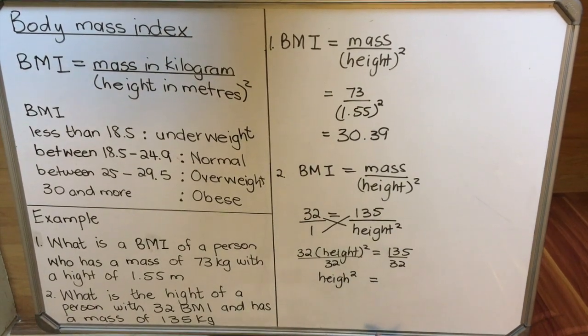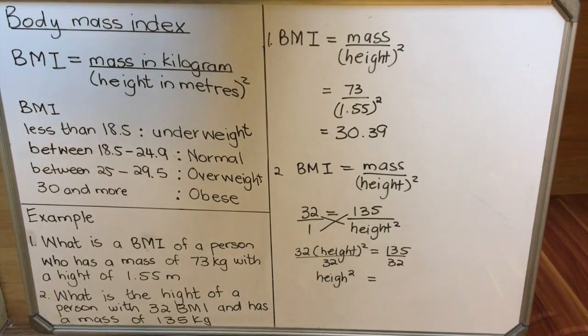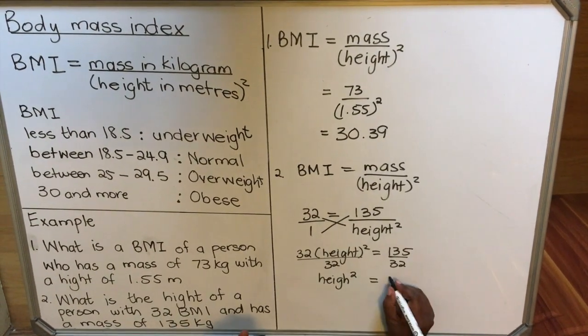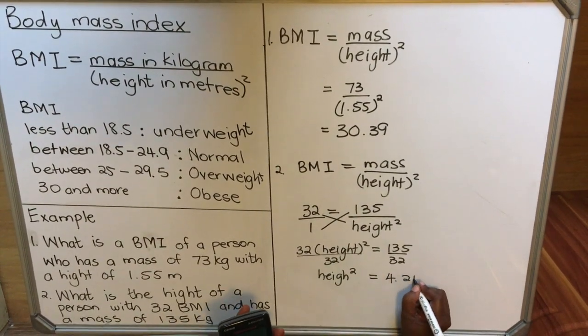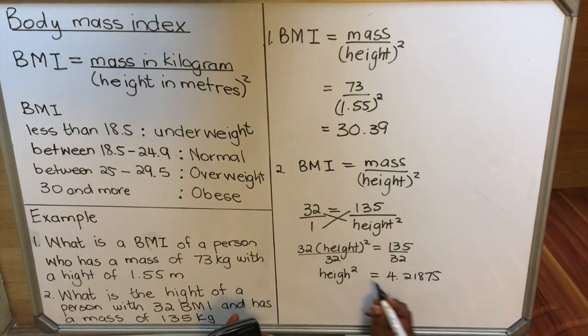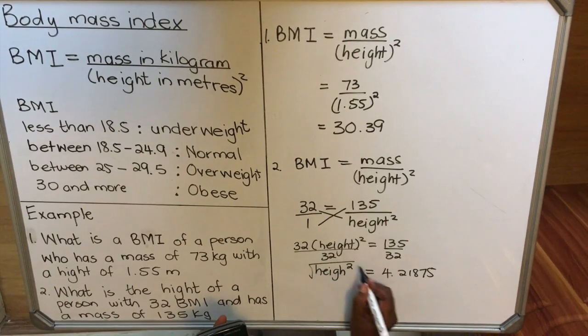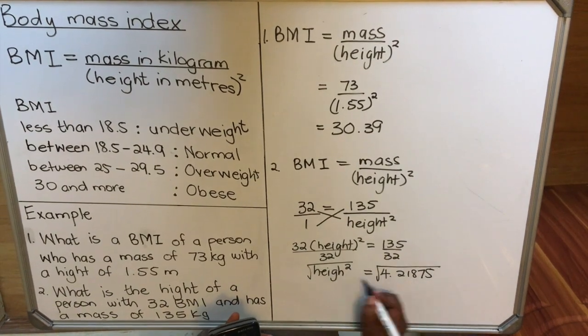In our calculator, 135 divided by 32, we get 4.21875. Now you see the squared—to get rid of the squared, we put a square root on both sides. So the square root will cancel the square.